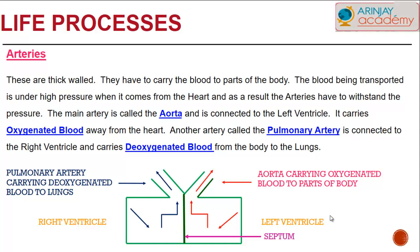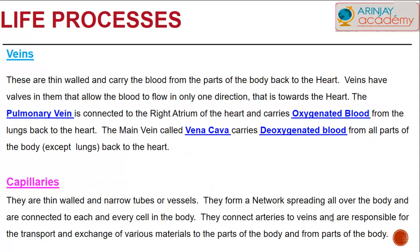The veins are thin-walled and carry blood from parts of the body back to the heart. Veins have valves that allow blood to flow only in one direction — towards the heart. The pulmonary vein is connected to the left atrium and carries oxygenated blood from the lungs back to the heart. The main vein, called the vena cava, carries deoxygenated blood from all parts of the body except the lungs back to the heart.